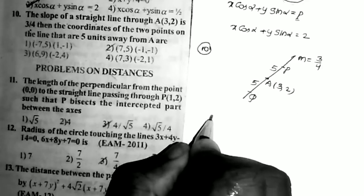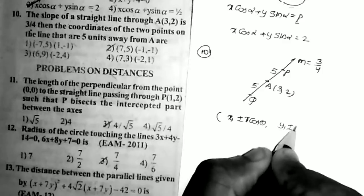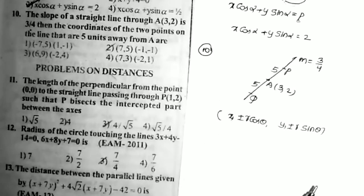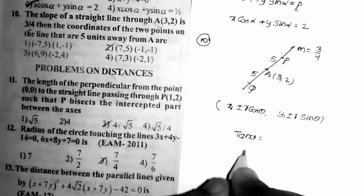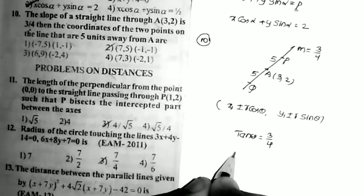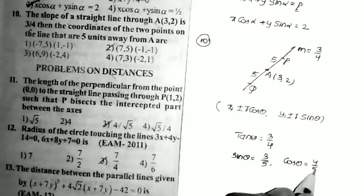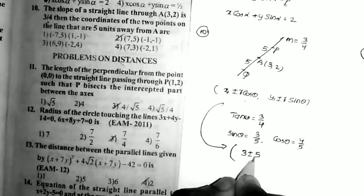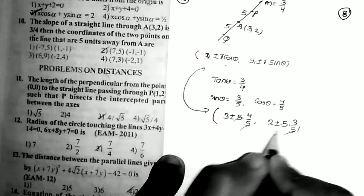Using the formula: (x1 ± r cos θ, y1 ± r sin θ). Here x1 = 3, y1 = 2, r = 5. Since m = tan θ = 3/4, we get sin θ = 3/5 and cos θ = 4/5. Replacing all values: x = 3 ± 5(4/5) = 3 ± 4, and y = 2 ± 5(3/5) = 2 ± 3.